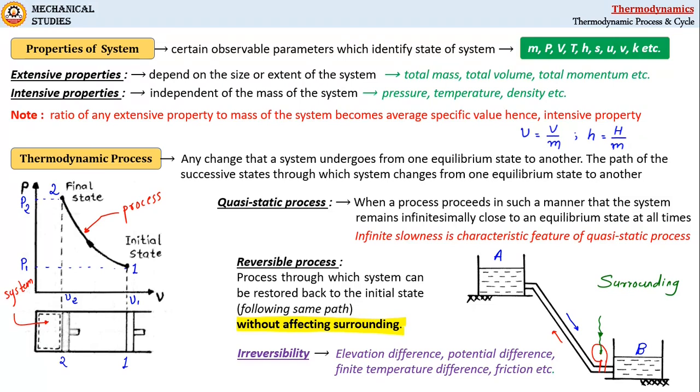These irreversibilities are always present in a system and we cannot completely remove them. That is why all processes are irreversible in nature. It is very difficult, rather impossible, to create a reversible process.